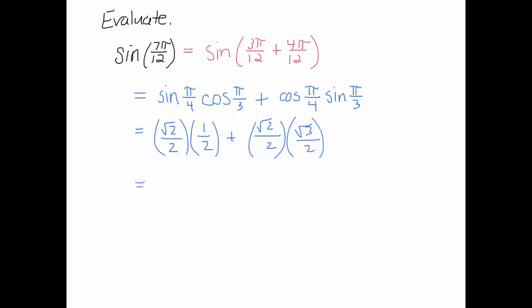So let's just simplify this. We get root 2 over 4 plus root 6 over 4. So our total is root 2 plus root 6 over 4. So that is what the sine of 7 pi over 12 is without a calculator. That is a very convenient formula to have.